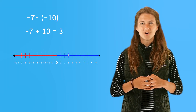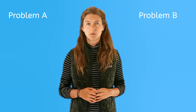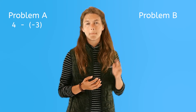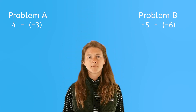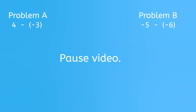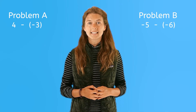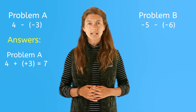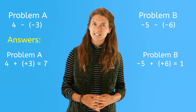I know you're brave and can try two on your own. Pause the video and try the following practice problems A and B. When you're ready, press play and I'll share the answers with you. Problem A: four minus negative three. Problem B: negative five minus negative six. How did you do? Did you remember to switch signs and add instead? Here are the answers. Problem A: four plus three equals seven. Problem B: negative five plus positive six equals one.